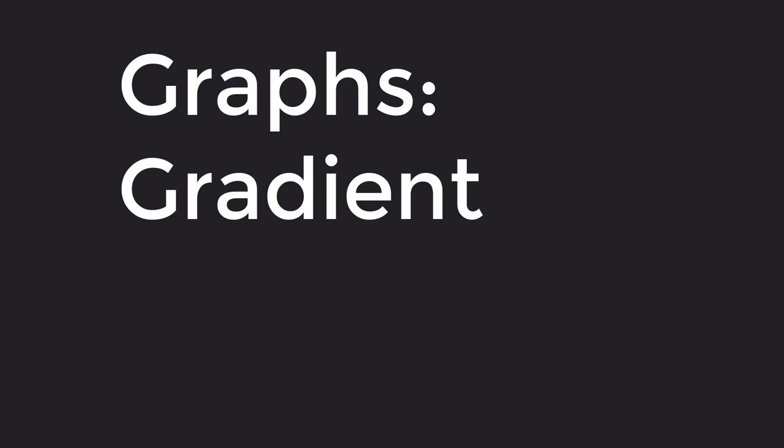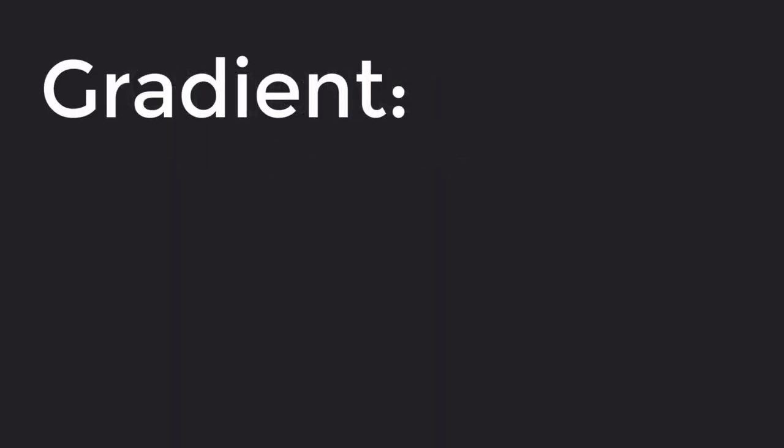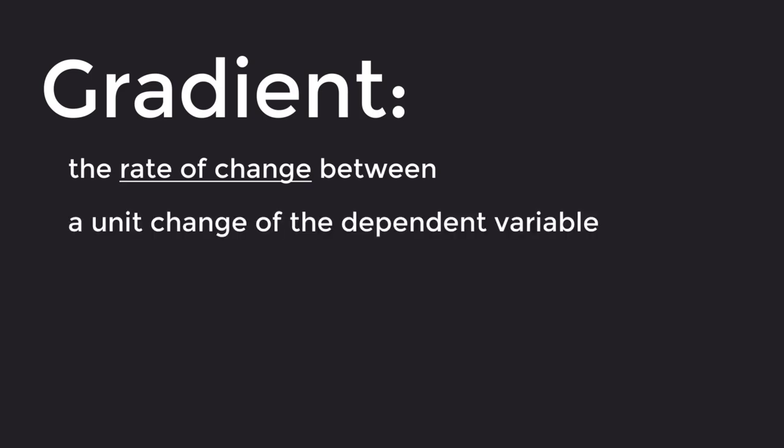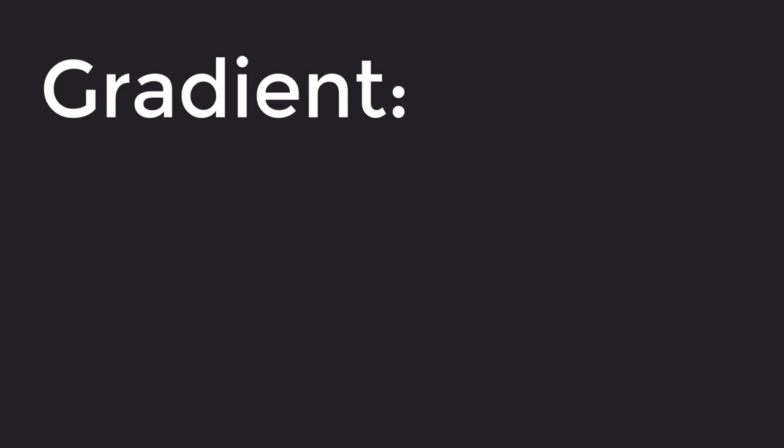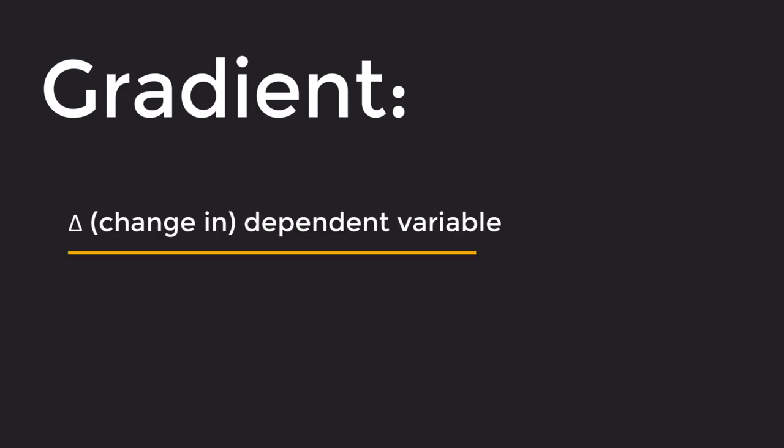In this video, we will focus on interpreting data, specifically the gradient of graphs. The gradient can be interpreted as the rate of change per unit change of the dependent variable per unit change of the independent variable. We can find the gradient of the line of best fit by the following formula: change in the dependent variable divided by change in the independent variable.